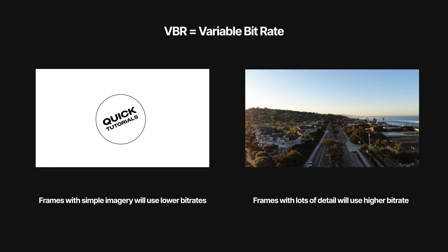The reason variable bitrate is smart is because it looks at your image and only uses as much data as is needed. For example, if you have an intro screen like the one on the left, you don't need a lot of data to produce a clean, sharp image — there are only two colors and not a lot of detail. The image on the right, on the other hand, has lots of different colors and fine detail, so to encode that with high quality you're going to need to use more data. Variable bitrate looks at your image and adjusts the data rate on the fly, maximizing image quality while trying to keep file sizes as small as possible.